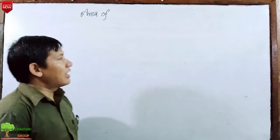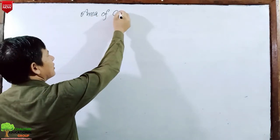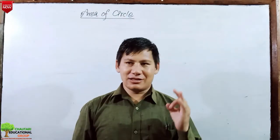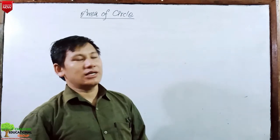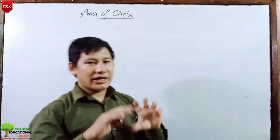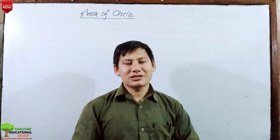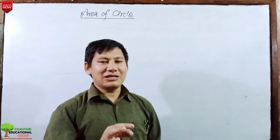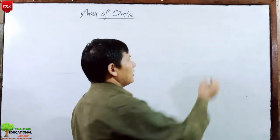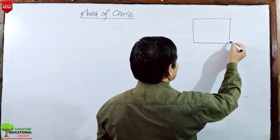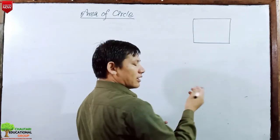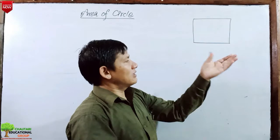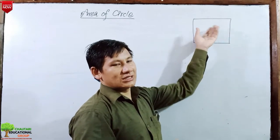Let's start with how to find the area of a circle. First of all, what is area of circle? We should be clear. Area means the region occupied by any plane surface — the region covered by a plane surface. For example, this is a rectangle. The area of this rectangle is the region enclosed by, that means covered by, this rectangle.